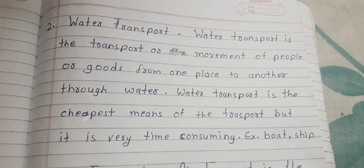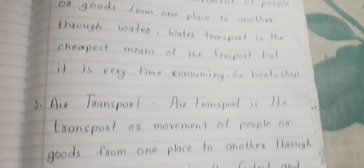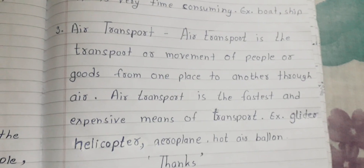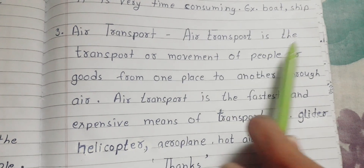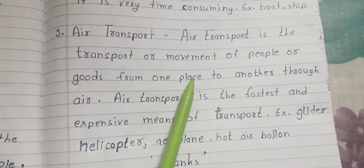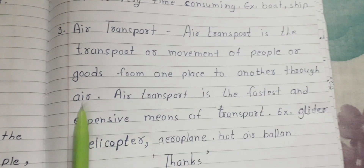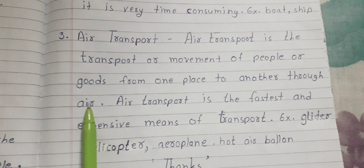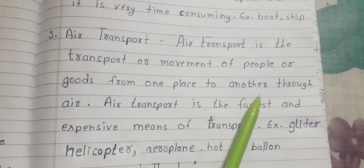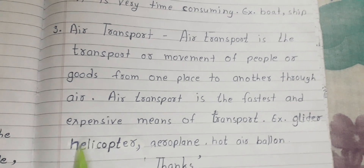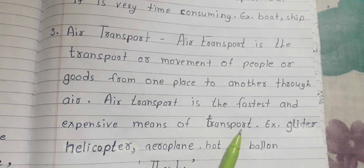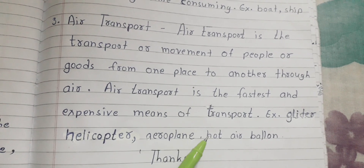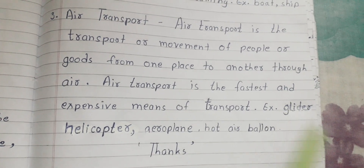Let's see the last one: air transport. Let's understand air transport by its definition. Air transport is the transport or movement of people or goods from one place to another through air. Air transport is the fastest and most expensive means of transport. Examples are glider, helicopter, aeroplane, hot air balloon, etc.